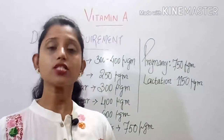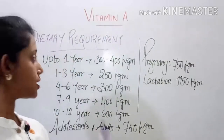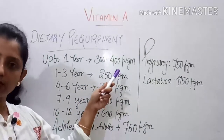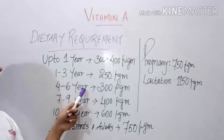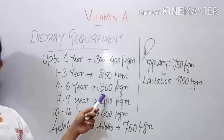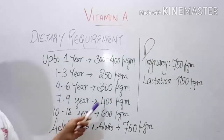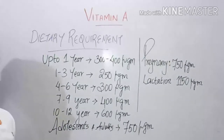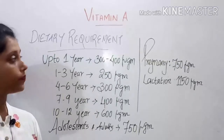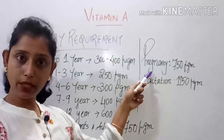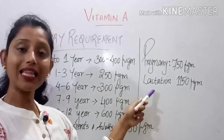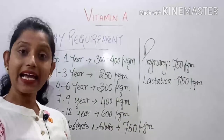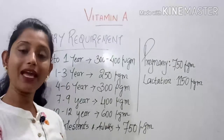The dietary requirements of Vitamin A by age group: up to one year — 300 to 400 micrograms; one to three years — 250 micrograms; four to six years — 300 micrograms; seven to nine years — 400 micrograms; ten to twelve years — 600 micrograms; adolescents and adults — 750 micrograms; pregnant women — 750 micrograms; lactating women — 1150 micrograms.